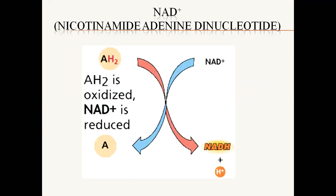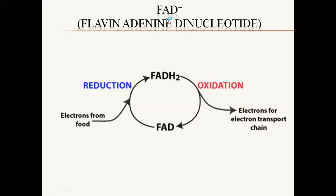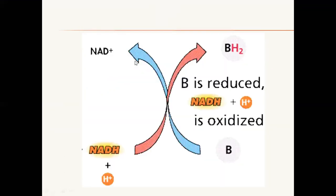We basically use hydrogen loss and hydrogen gain in oxidation reaction processes. In catabolism, molecules convert into smaller ones and energy is released. Energy can be released directly in the form of ATP, or captured by carriers. Carriers capture electrons and carry them to the ATP machinery. There are two carriers: one is NAD and the other is FAD.